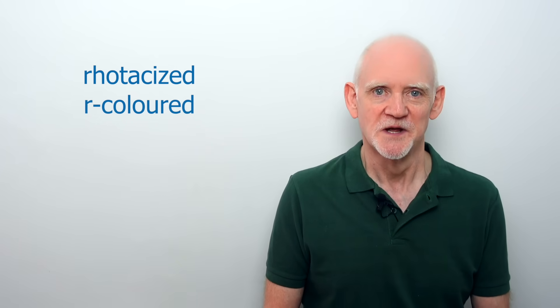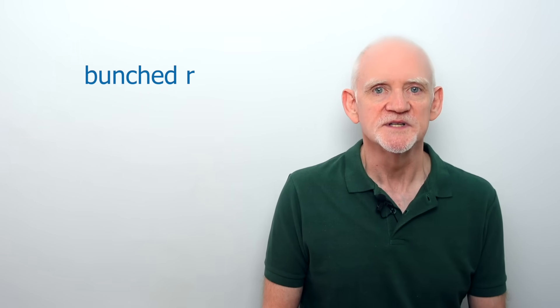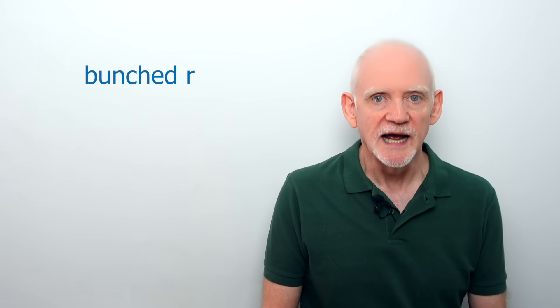For many younger Australians, the glide in the goat diphthong is becoming, or has become, rotacised, or R coloured. Specifically, the vowel glides into what we can call a bunched R. In other words, not so much ɹ̠ as ɹ̈.